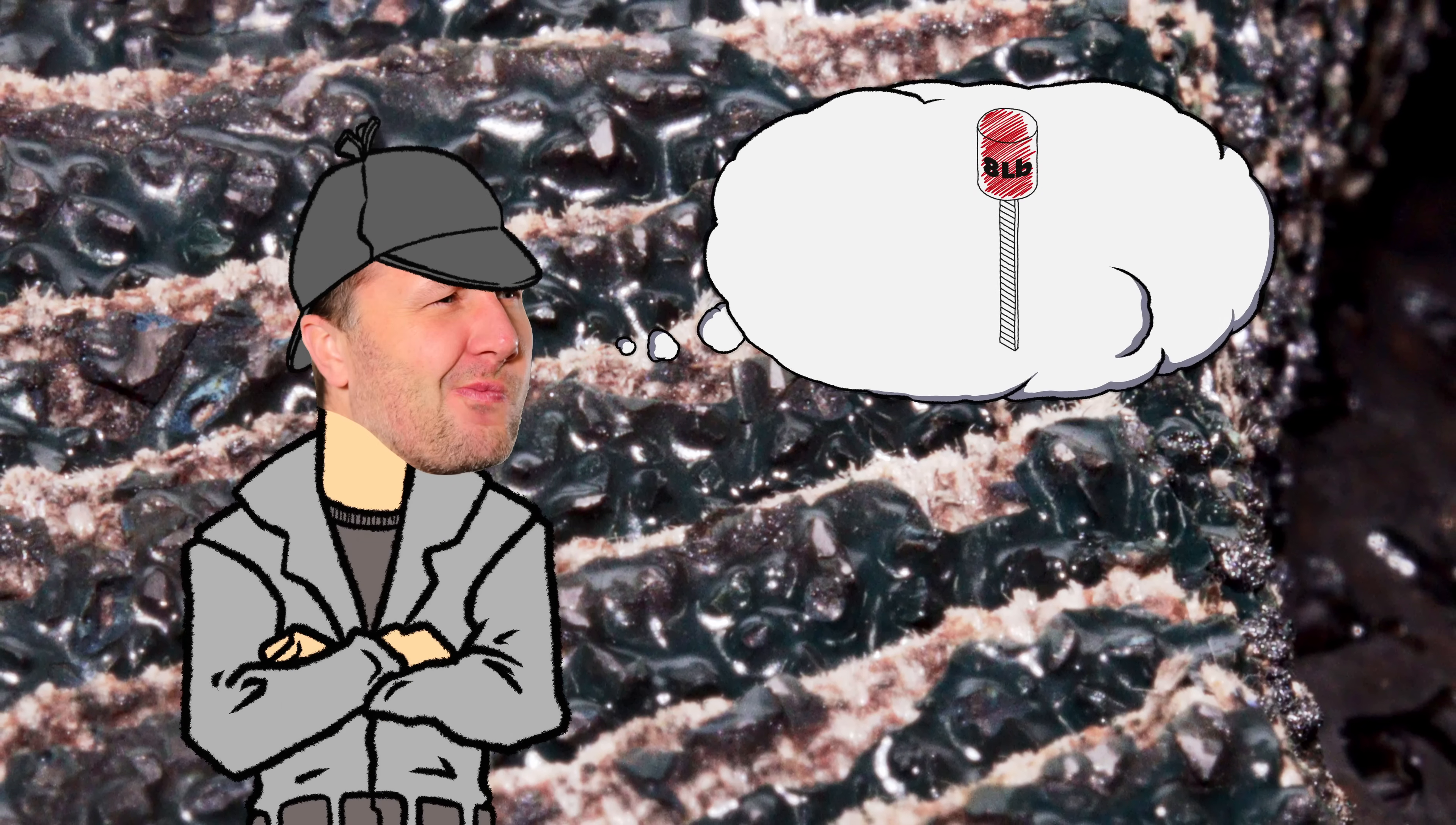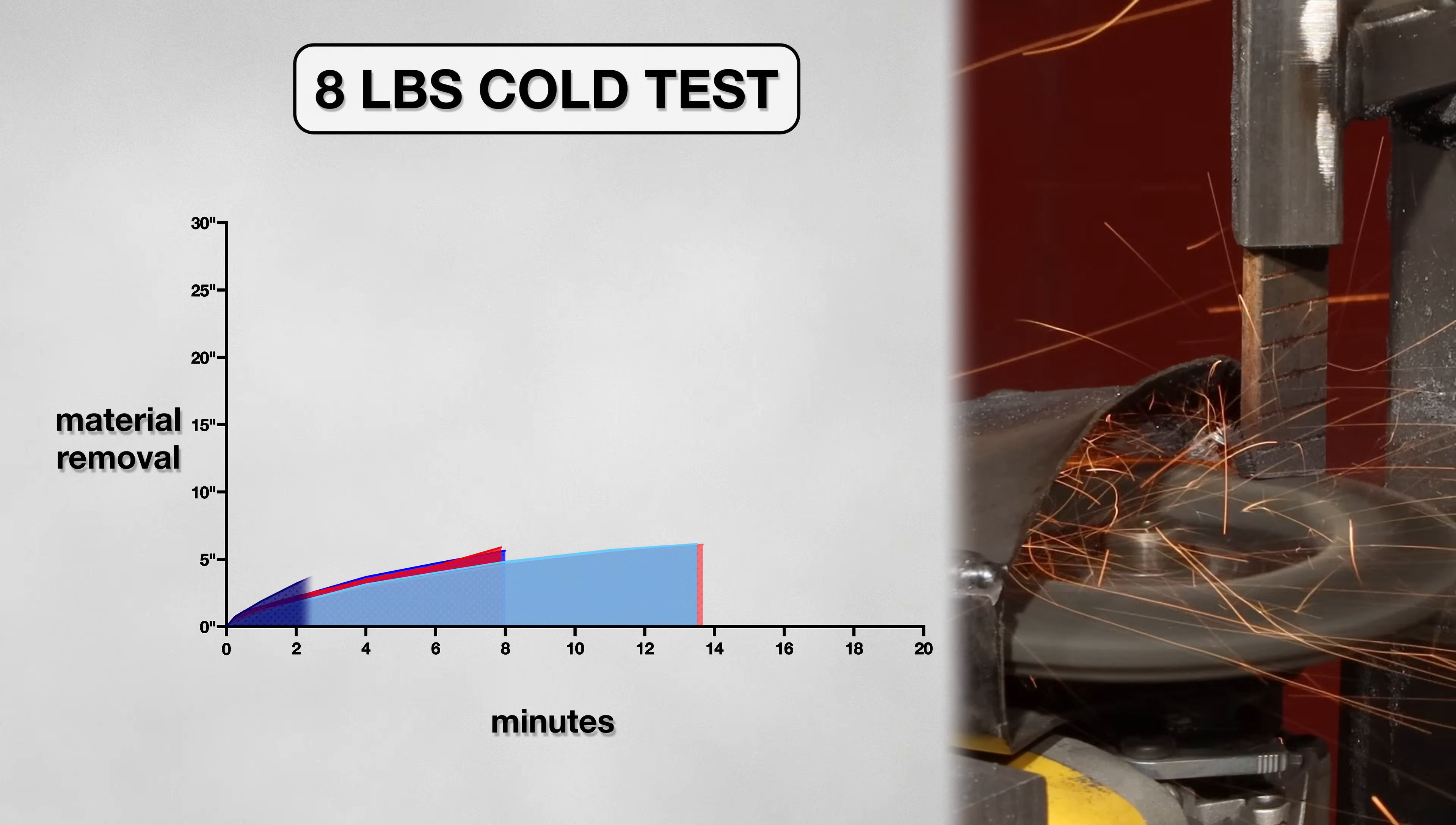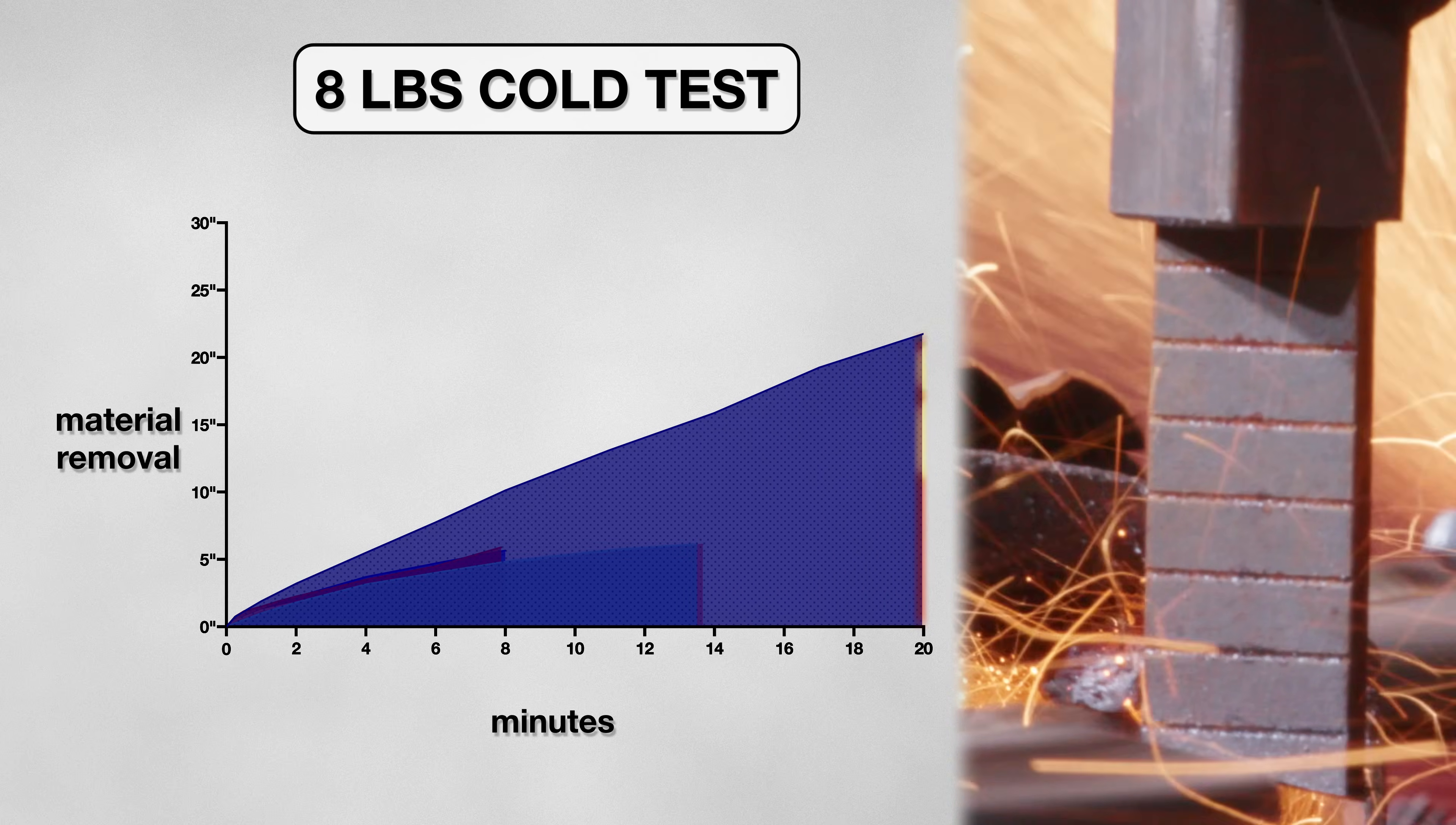So I put my speeds back to 11,000, and I swapped my four pound weight for eight. And this time, the New York started cutting at a quick rate. And by the two minute mark, it had taken off over three inches. This time the disk was able to grind for the whole 20 minute test and took off close to 22 inches. This was a major improvement over the last test.